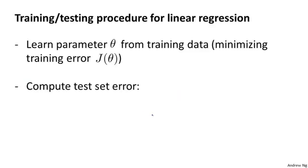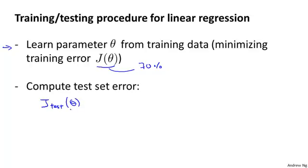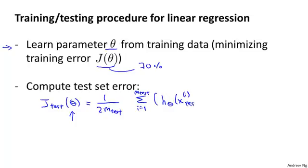Here is a fairly typical procedure for how you would train and test a learning algorithm — say, linear regression. First, you would learn the parameters theta from the training set, minimizing the usual training error objective J of theta, where J of theta is defined using that 70% of all the data you have — that's only the training data. And then you would compute the test error. I'm going to denote the test error as J subscript test, where you take your parameter theta learned from the training set and compute the average squared error as measured on your test set.